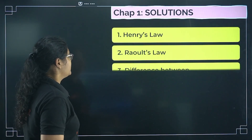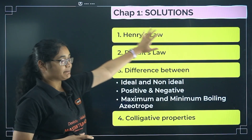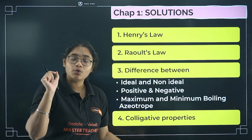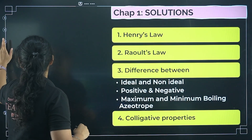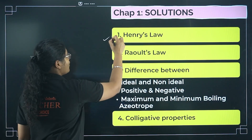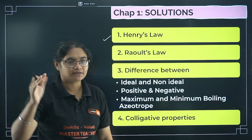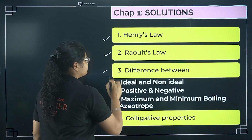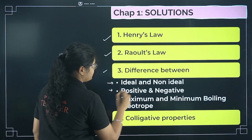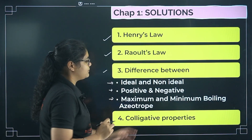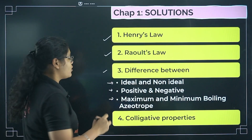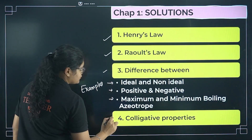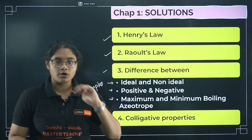From the chapter Solutions, prepare only this much: first, Henry's law — learn the definition and its mathematical expression. Similarly, Raoult's law and its mathematical expression. Also, the difference between ideal solution, positive deviation, and negative deviation, and maximum and minimum boiling azeotropes — focus on examples here.